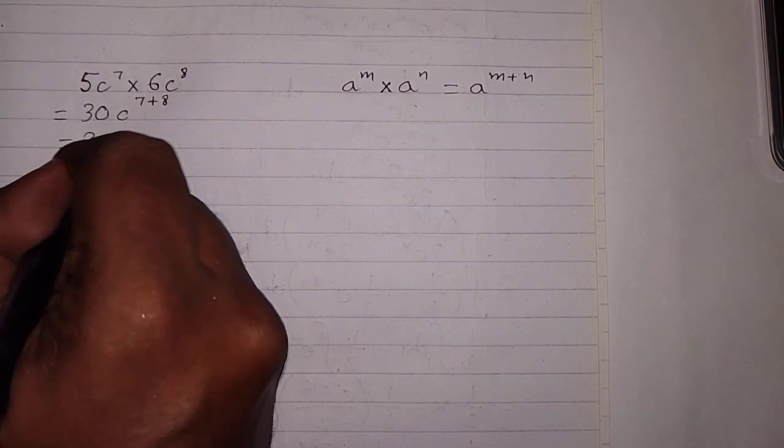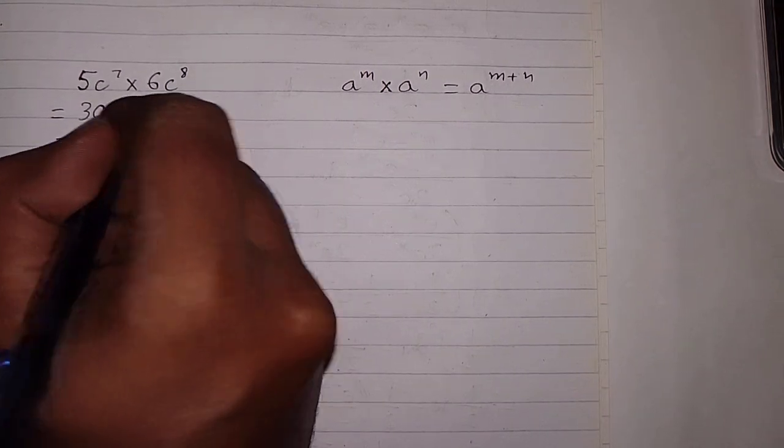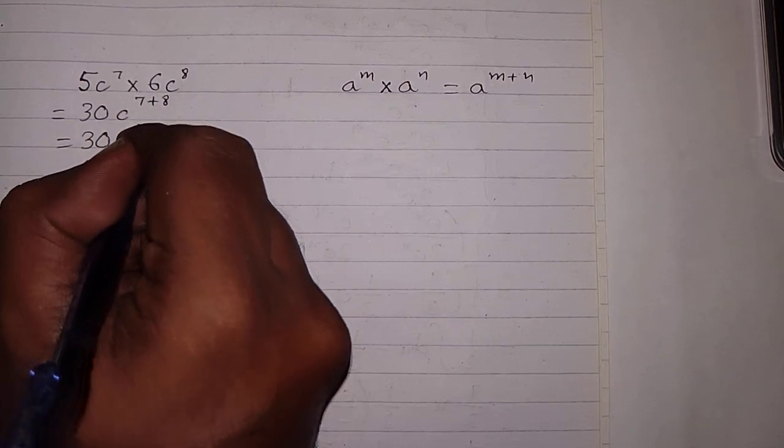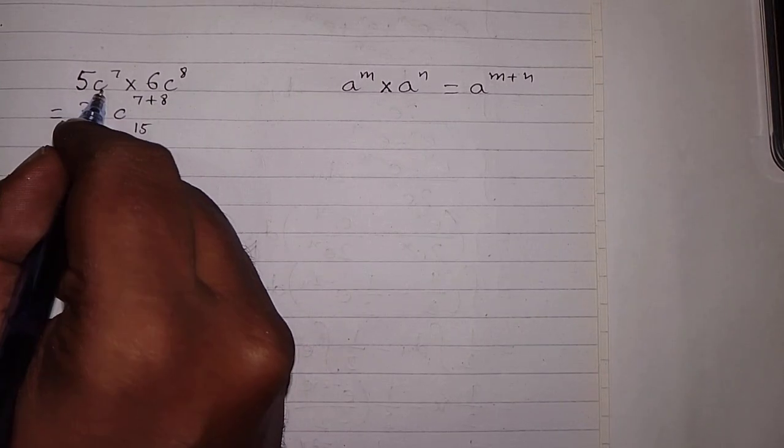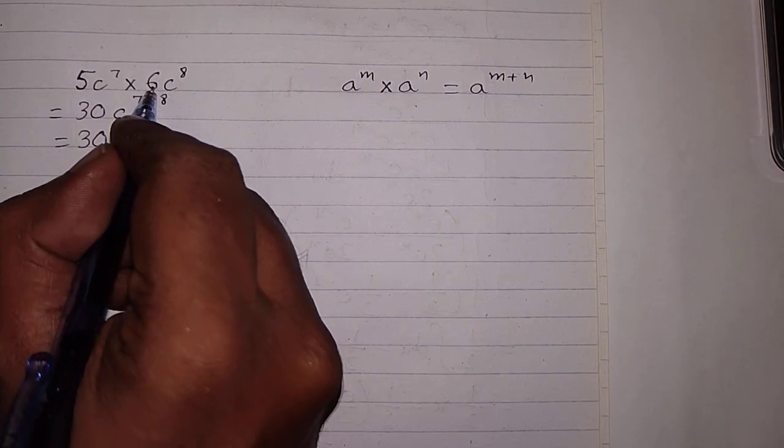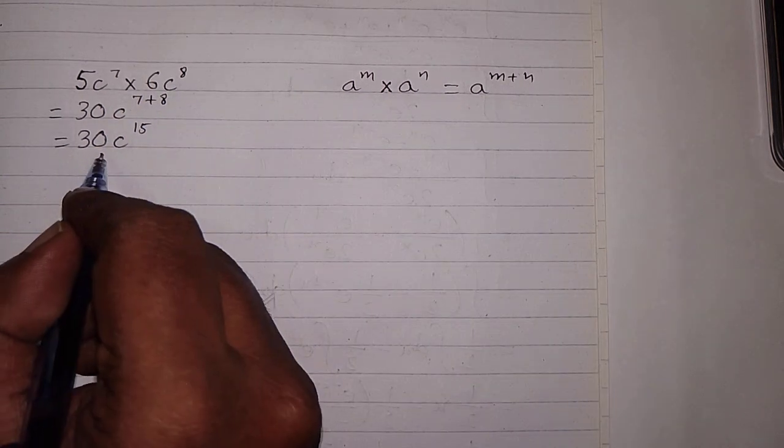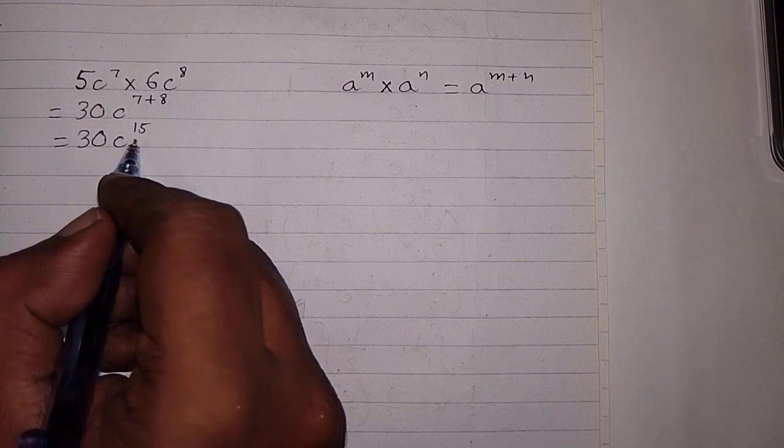And then we have 30 times c raised to the power 7 plus 8 is 15. So 5c raised to the power 7 multiplied by 6c raised to the power 8 is equal to 30c raised to the power 15.